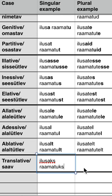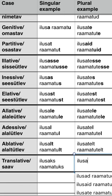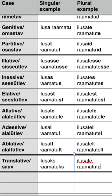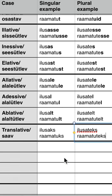And for the plural right away: the genitive plural base is 'ilusate raamatute', and we just add 'ks' at the end — giving us 'ilusateks raamatuteks'. An example for this case: 'I wanted to become a beautiful book.' In Estonian: 'Ma tahtsin saada ilusaks raamatuks'.